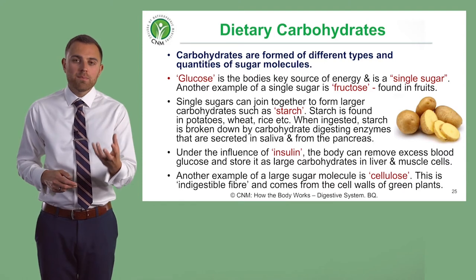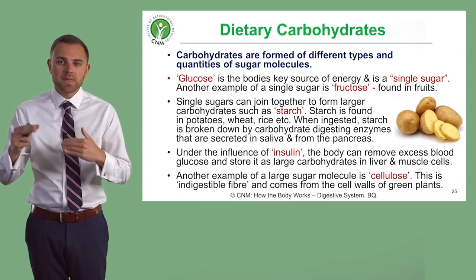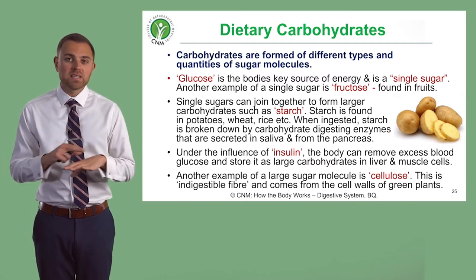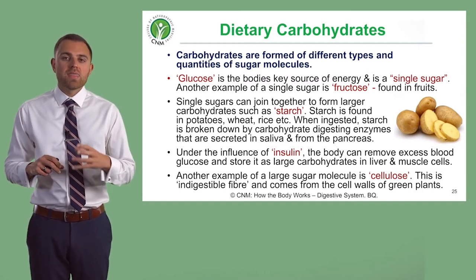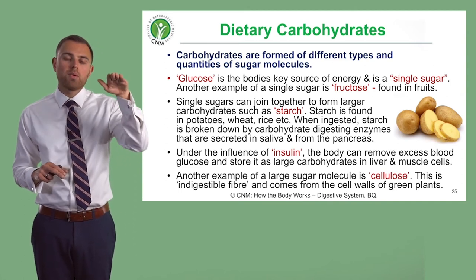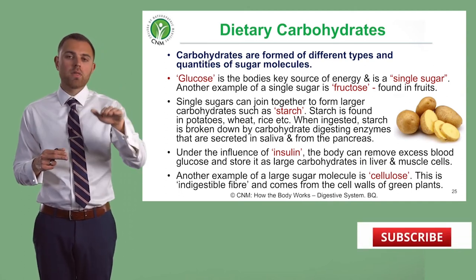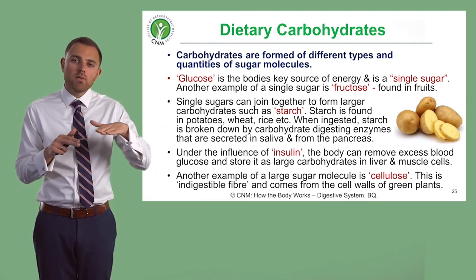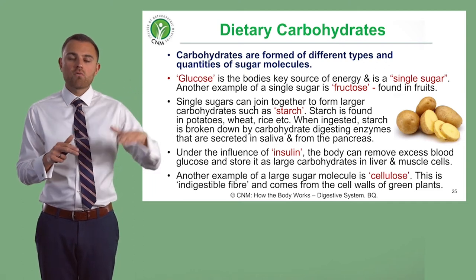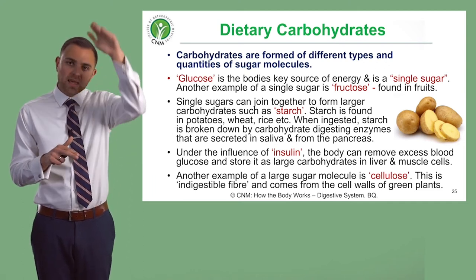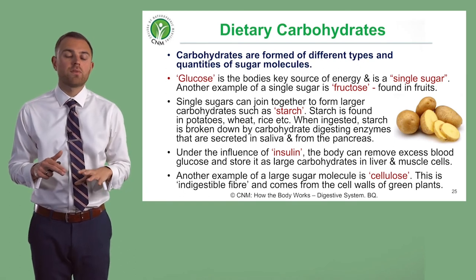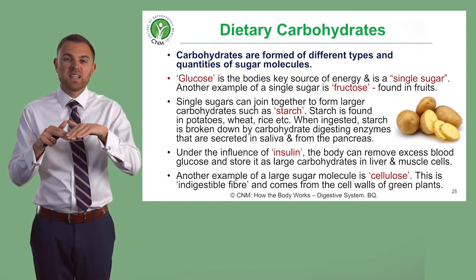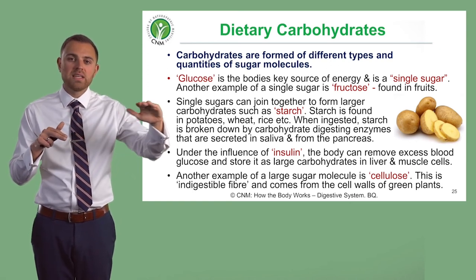When the body absorbs glucose — whether that has been broken down from something like starch or if somebody has just eaten simple sugars — that will cause insulin levels to go up because the body will need to lower those blood glucose levels. What we want are foods that slowly have an effect on blood sugar levels, rather than foods that suddenly spike blood sugar levels, which can be very detrimental for our overall health. So we want more complex carbohydrates that more slowly release their energy.